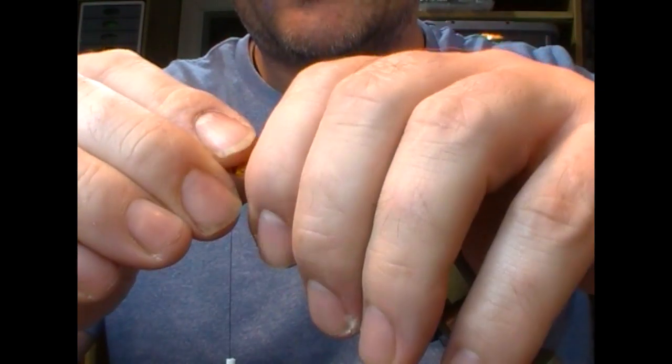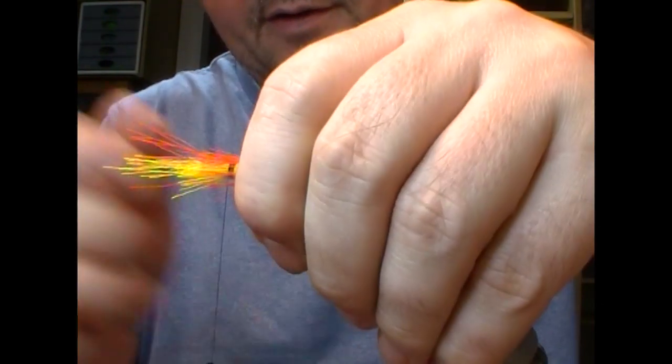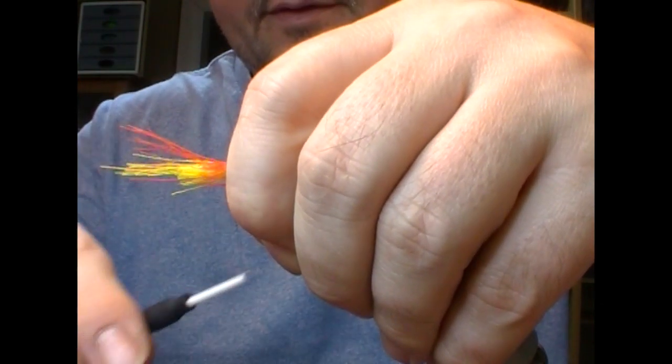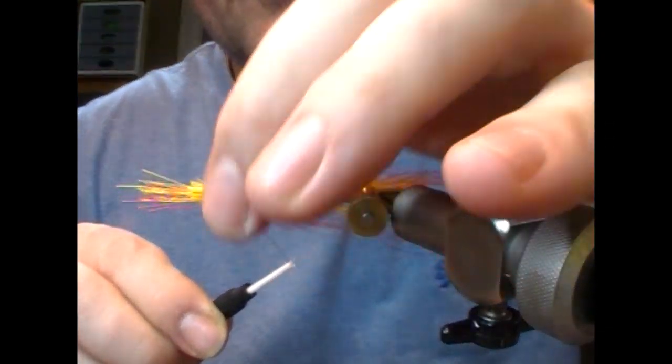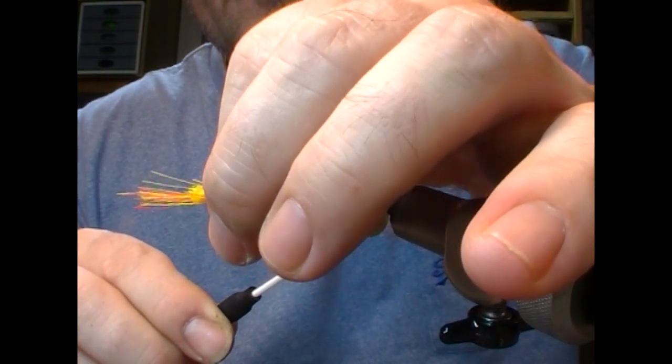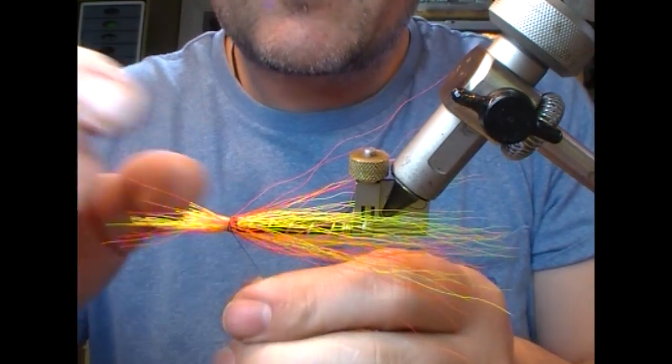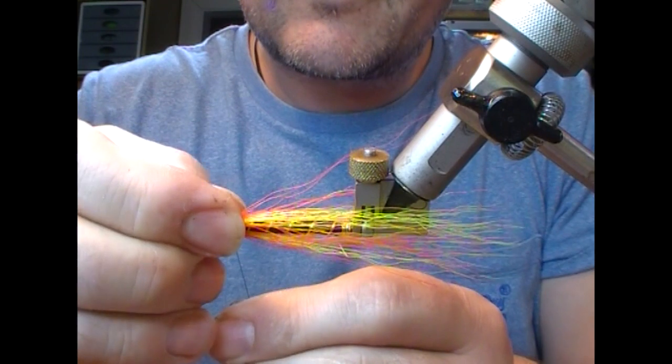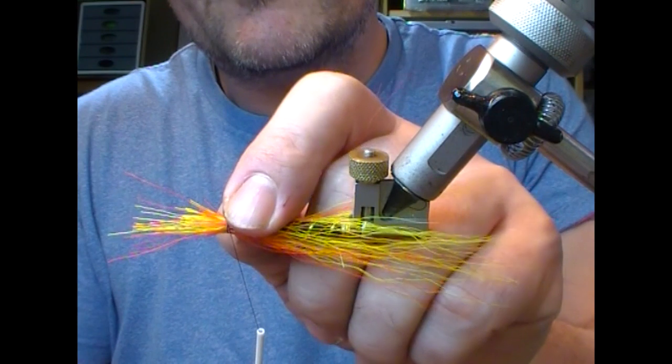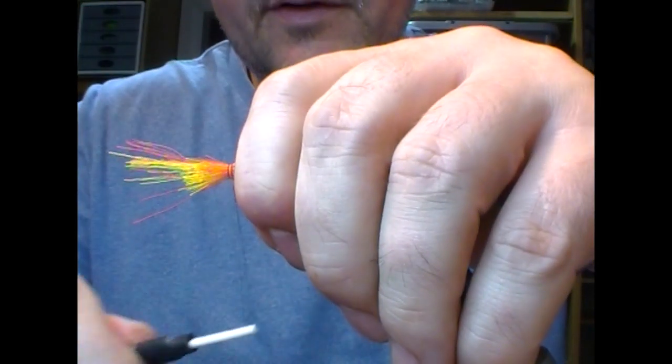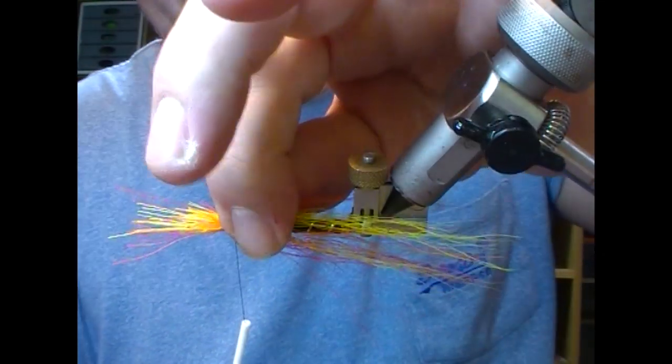And then we take the orange bunch and the same thing. Allow it to splay all around. Have a look. Loose wrap. Use our nail. And we're happy that we have a fairly even coverage. I'll run back onto it.